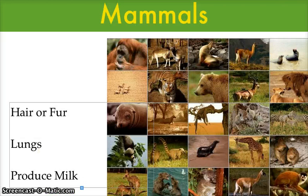Animals that have fur or hair are called mammals. Mammals use lungs to breathe. Even mammals that live in water, like whales, breathe with lungs. They must come to the surface of the water to breathe.